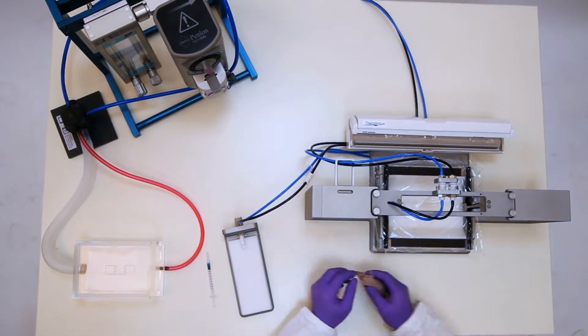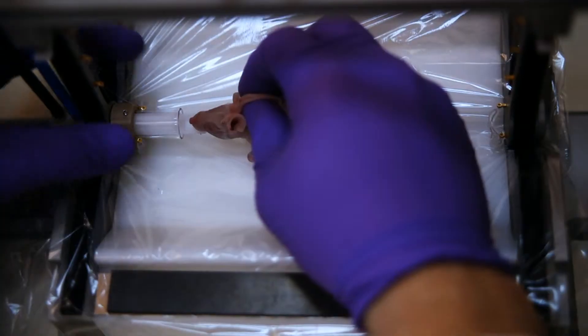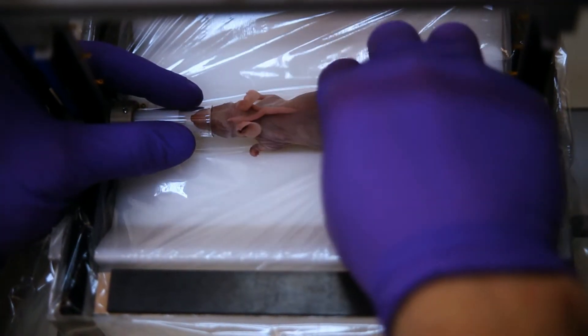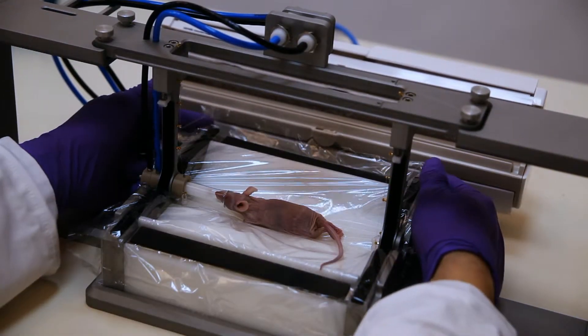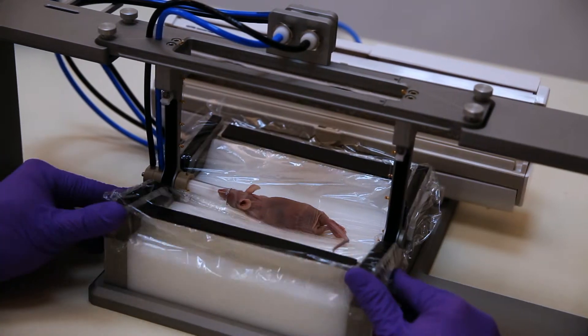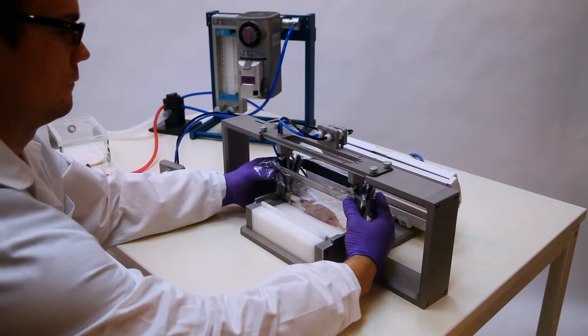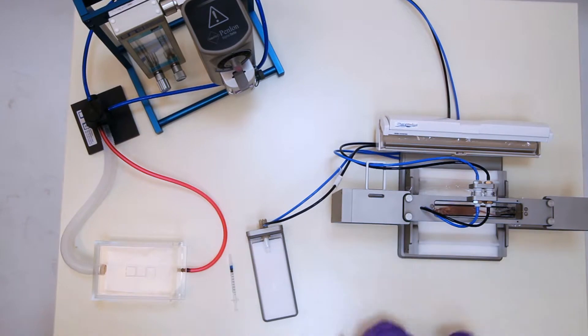The animal is placed onto the membrane in the animal holder. It is held in position via a tooth bar. A nose cone ensures safe anesthesia delivery. Clamps are folded up to surround the animal with the coupling membrane.